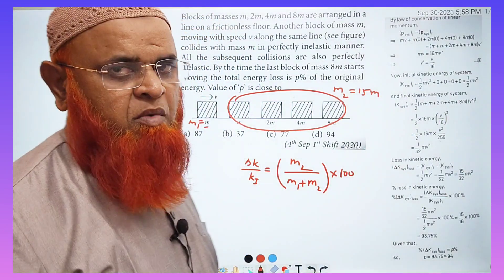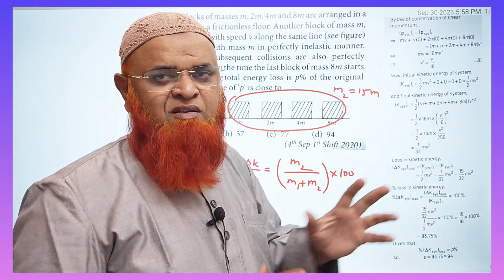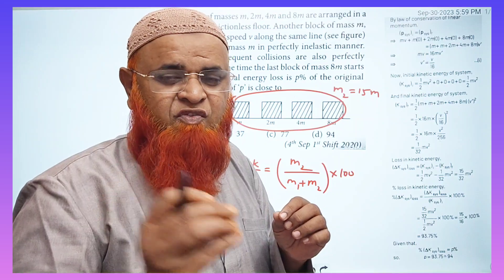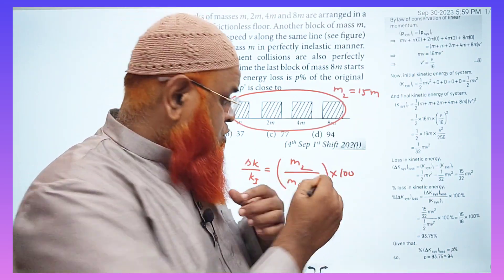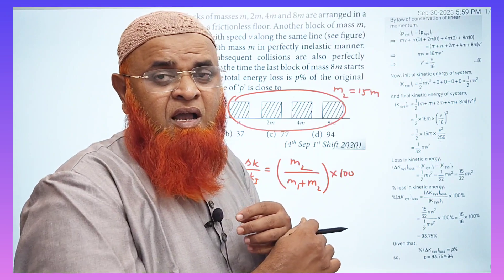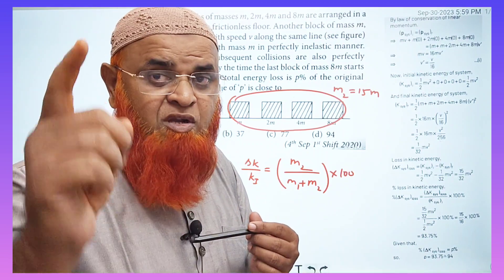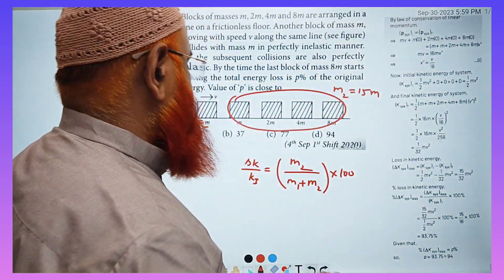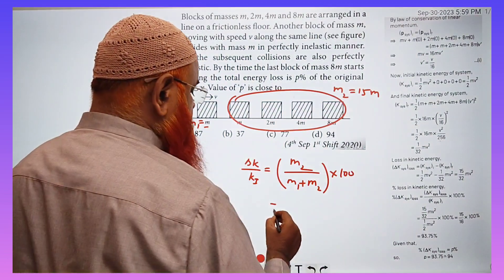So for that, the shortcut formula is you can write just m₂ by (m₁ + m₂) into 100, that's it. This is the shortcut formula. Instead of using all these nuisance and nonsense, whenever he's asking us to find out the percentage loss here, I will tell you how I can derive this formula, how I created this shortcut. Don't worry about that.